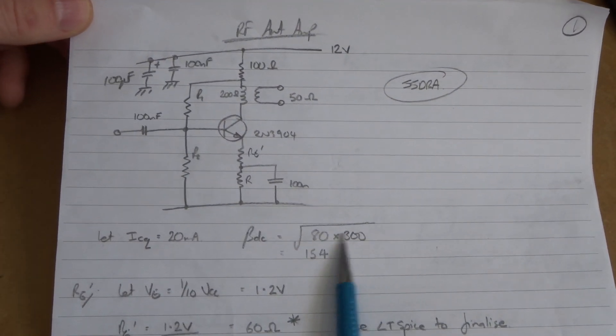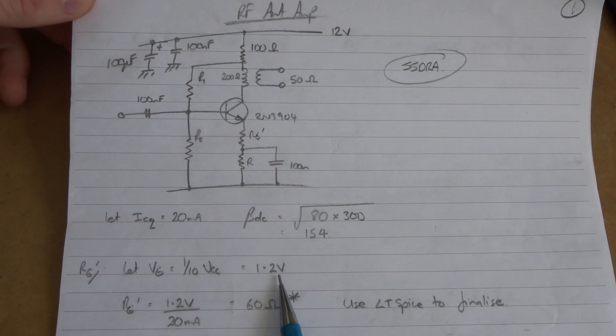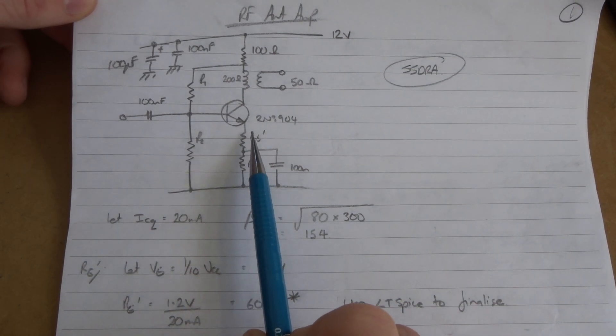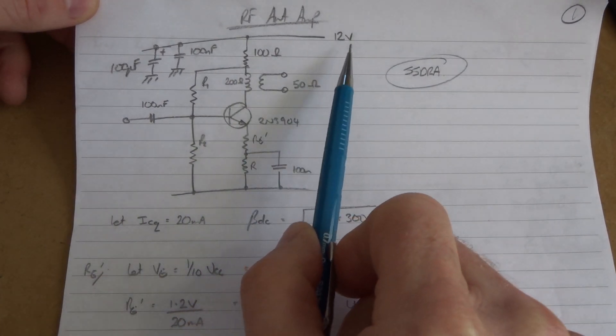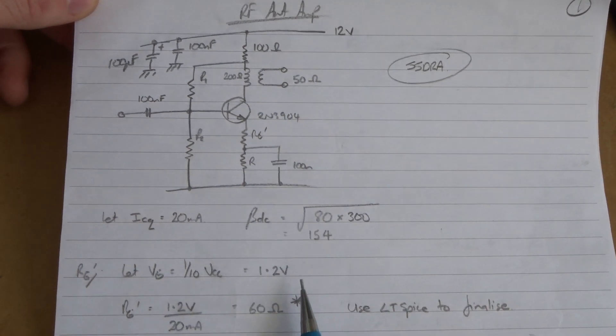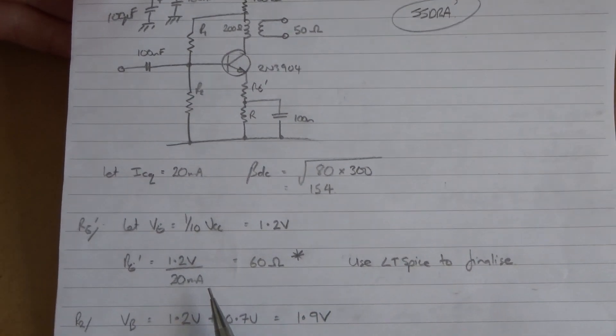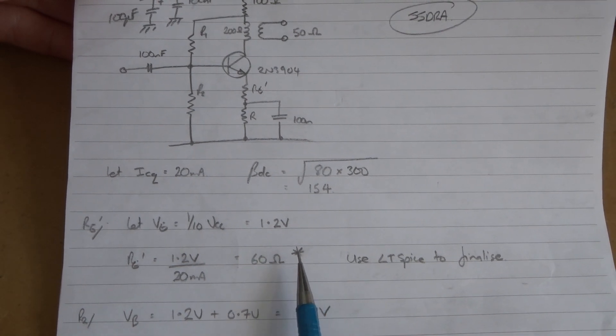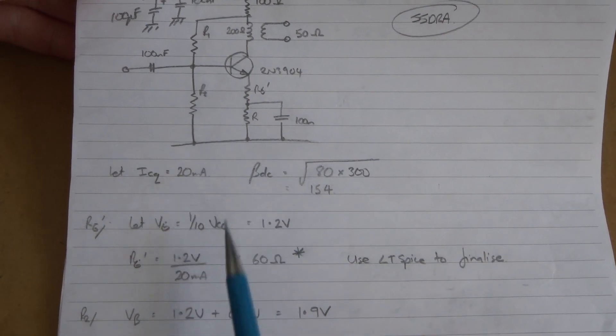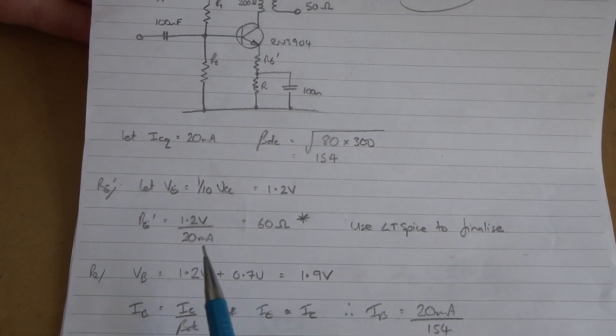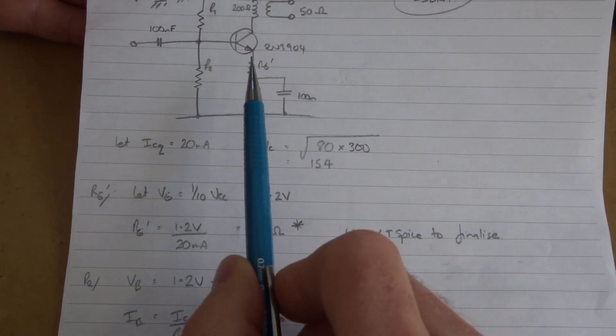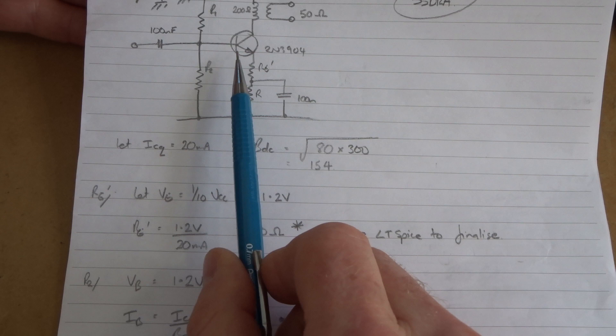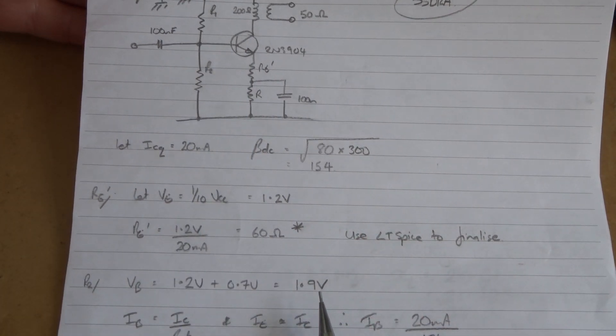I'm going to set the emitter resistance to be 1.2 volts, which is a tenth of our VCC, and at 20mA through it comes out to 60 ohms. I've split that into two. R1, same approach we've seen before, our emitter voltage plus 0.7 comes out at 1.9.